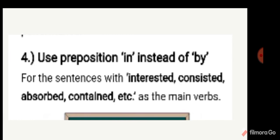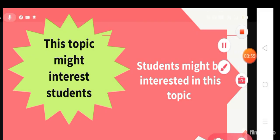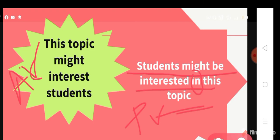Let us look at the example. The active voice is: 'This topic might interest students.' The passive voice is: 'Students might be interested in this topic' — interested in, not by.